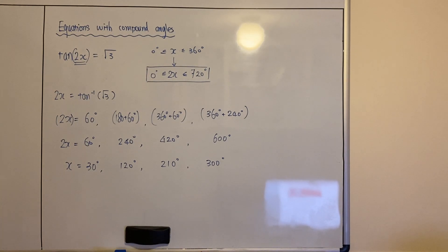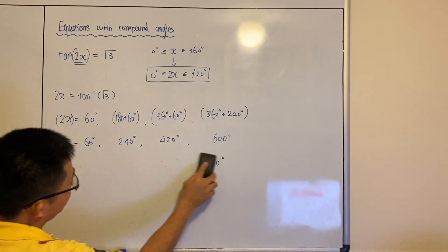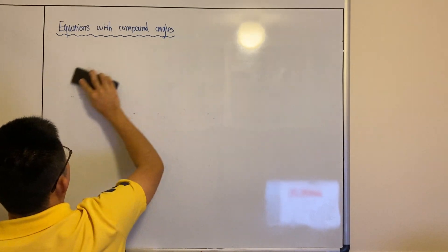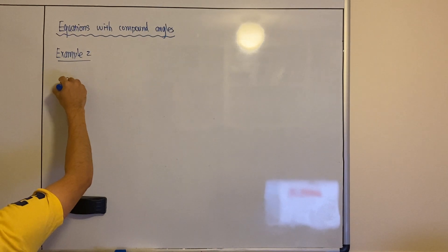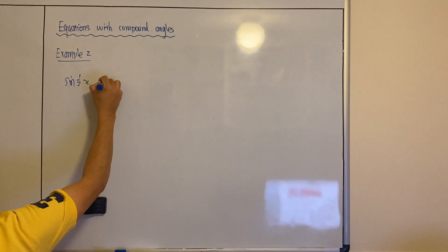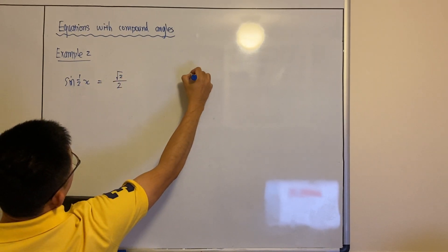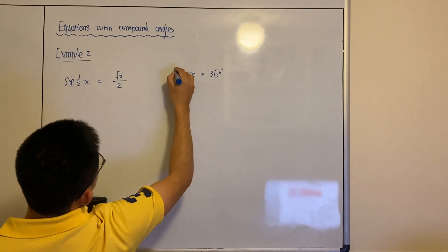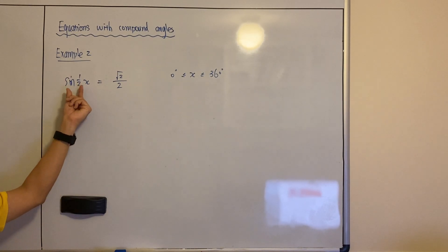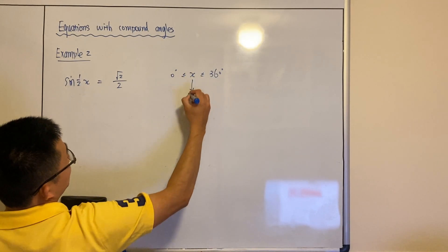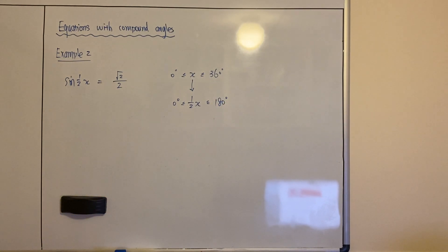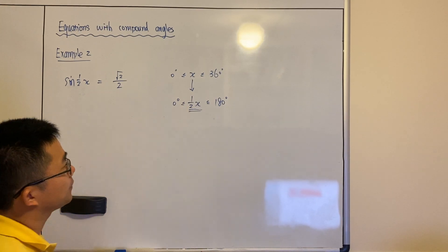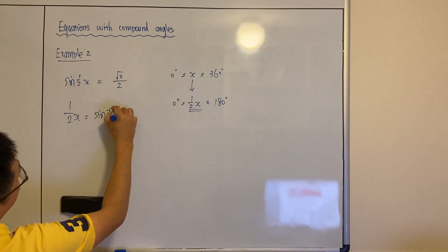We're going to do another example to show what happens with half x or even a quarter x. Example 2: sin(x/2) equals root 2 over 2, and the question asks you to find answers from 0 to 360 degrees. Pay attention — this is half x. As usual, we're going to change the domain to half x. We divide everything by 2, so the new domain is 0 to 180 degrees. You only need to find answers between 0 and 180 for half x.